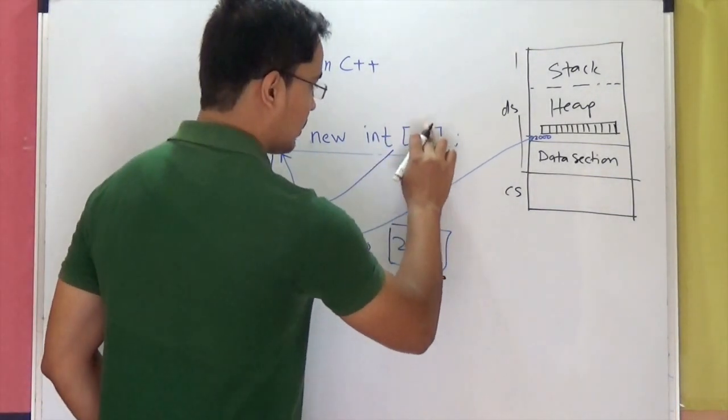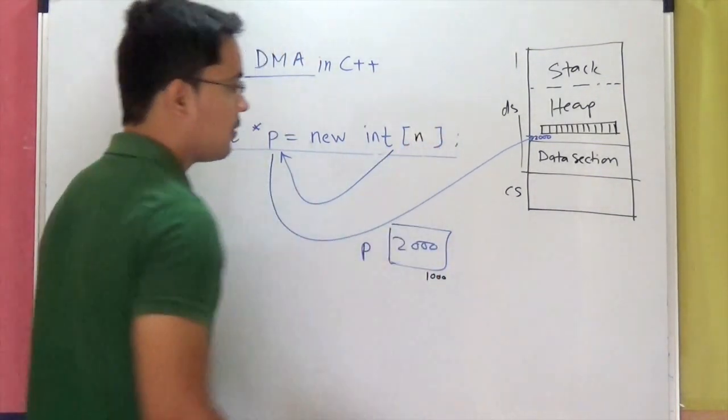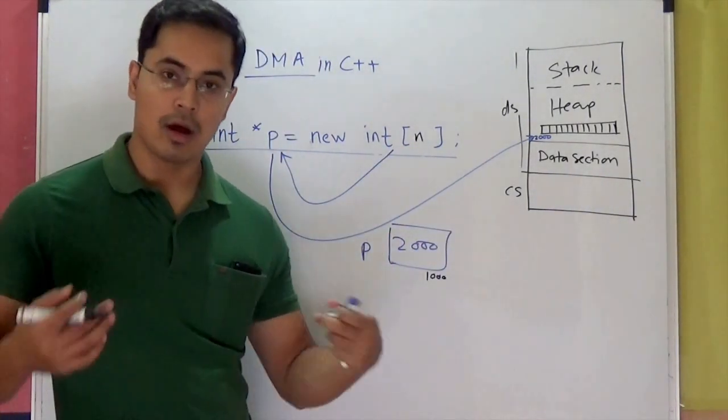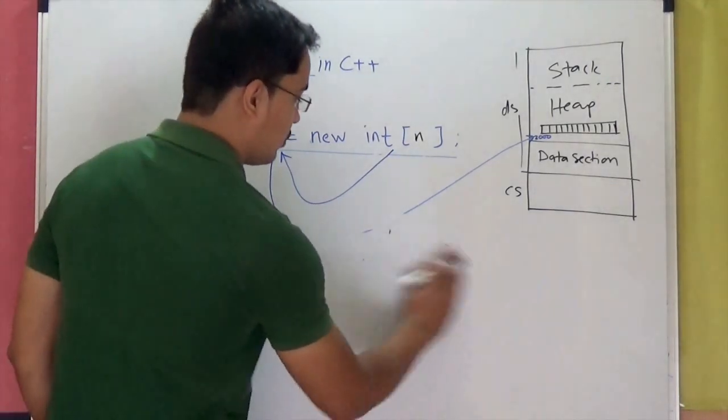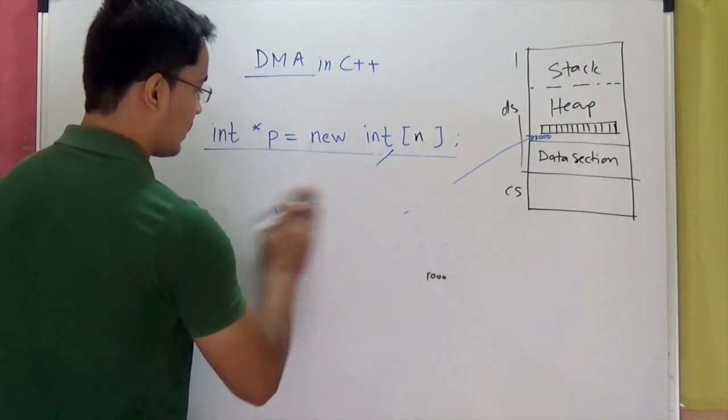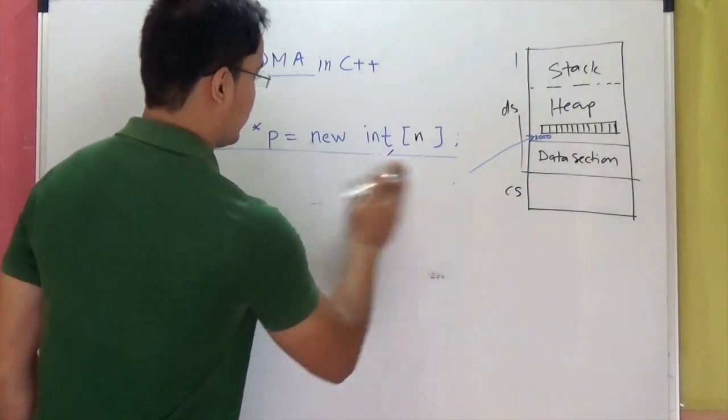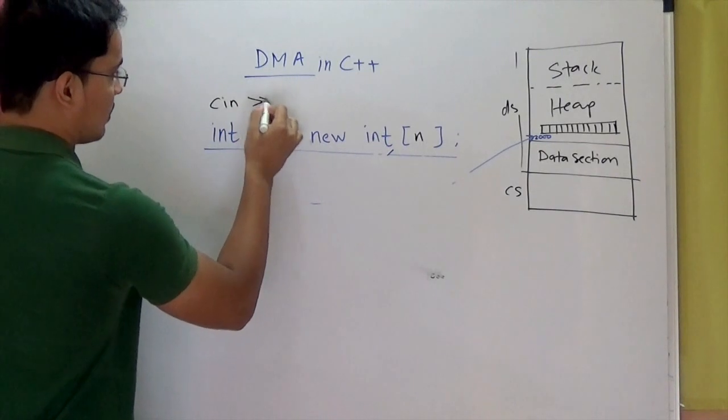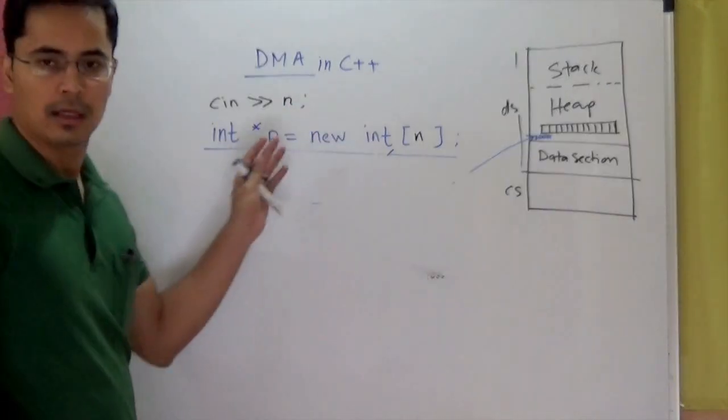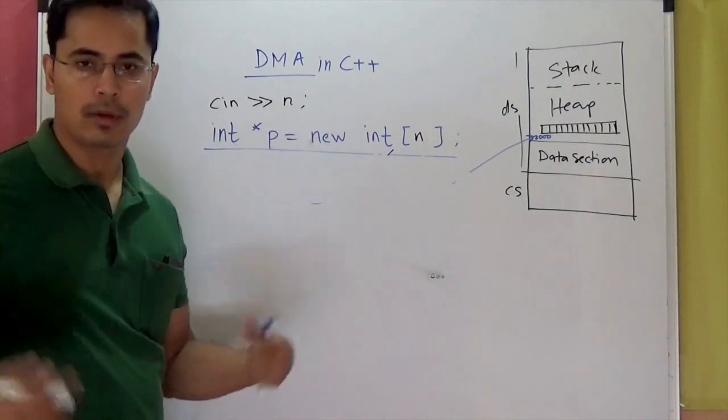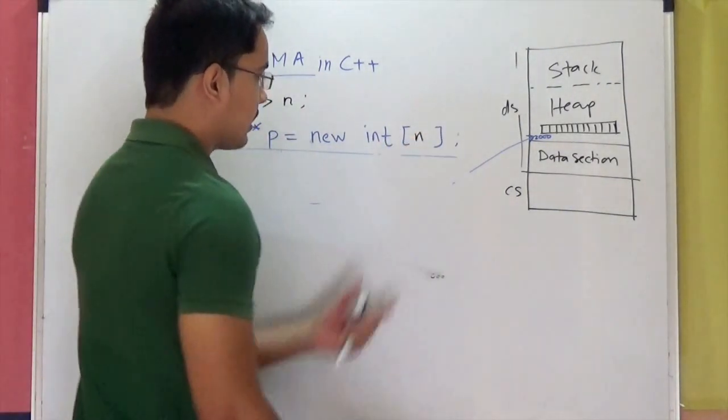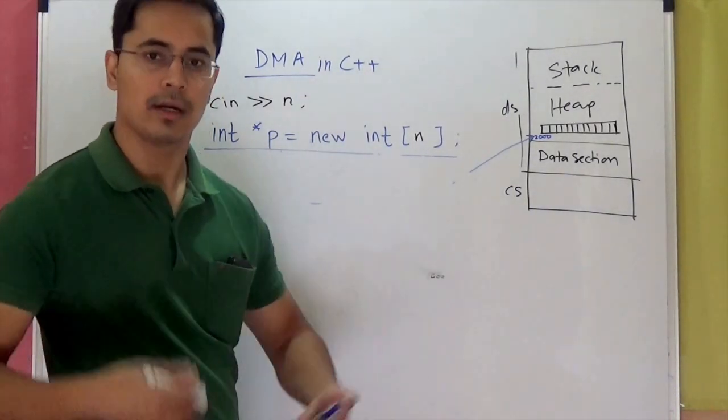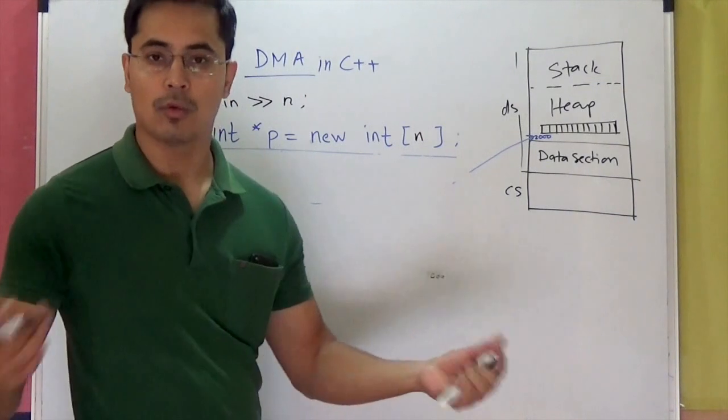So here you can actually use variable. It's not mandatory. This is not like array syntax where you have to specify size. So you can use a variable here. And then what you can say is that something like C in N. That is enter the number of integers you want to allocate memory for. And then use that variable N here inside this square brackets. So that way it is dynamic. You can decide runtime how much memory you want to allocate.